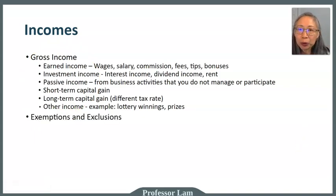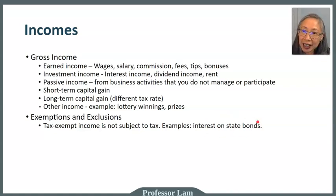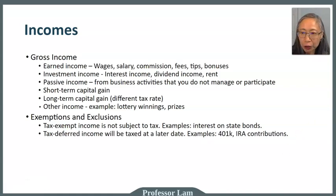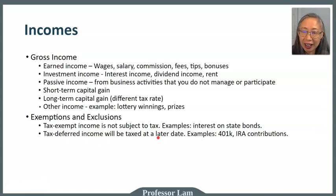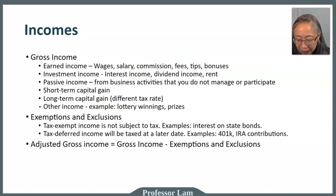There are exemptions and exclusions that reduce your adjusted gross income. Tax-exempt income is not subject to tax — a common example is income on municipal bonds, which are bonds issued by various states. Another category is tax-deferred income, meaning it will be taxed at a later date. Contributions to qualified retirement accounts — such as 401k or IRA — are tax deferred: you don't pay tax this year, but when you retire and take the money out, it gets taxed. Your adjusted gross income is your gross income minus all exemptions and exclusions.